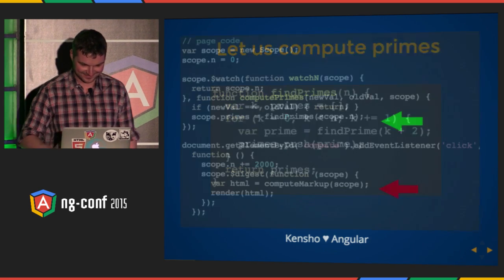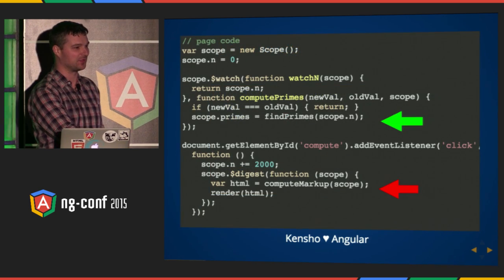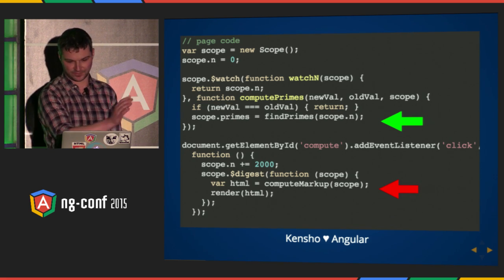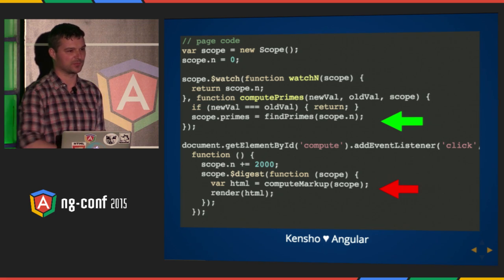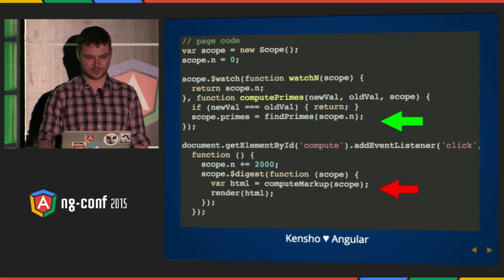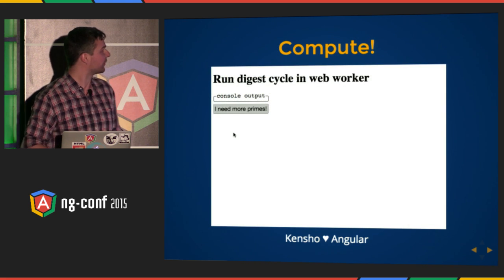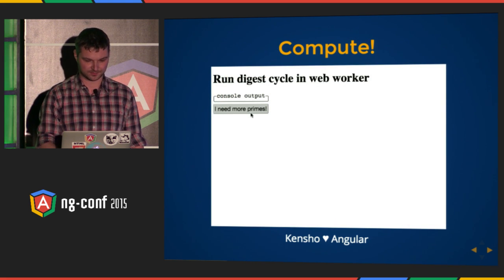Let's look at this again. Here's a small digest cycle — very, very simple in Angular 1. It's going away, but right now it exists. I have a scope, I have number of primes, and I'm finding them if number of n changes. So I try to read. I need more primes than Christopher Walken's voice.